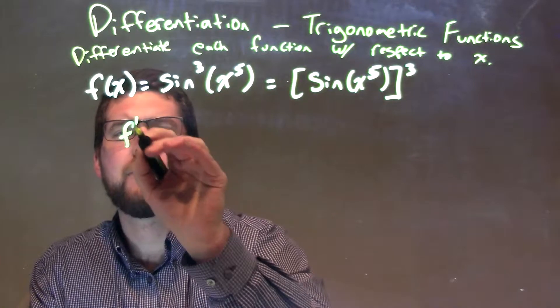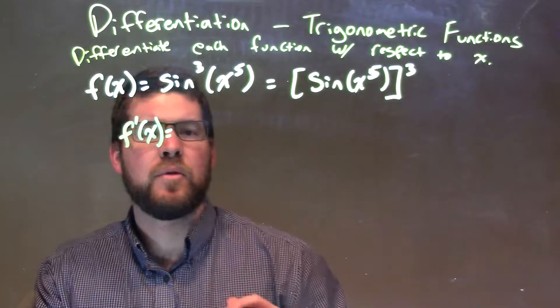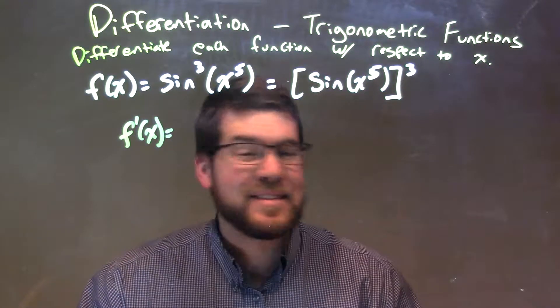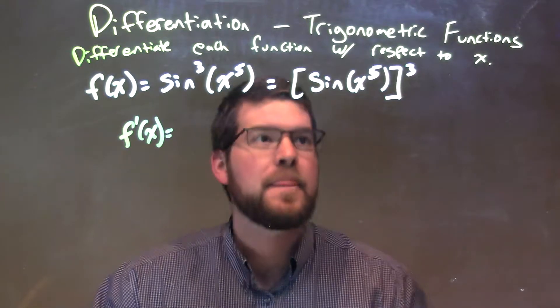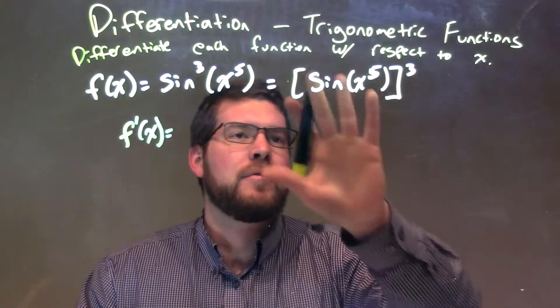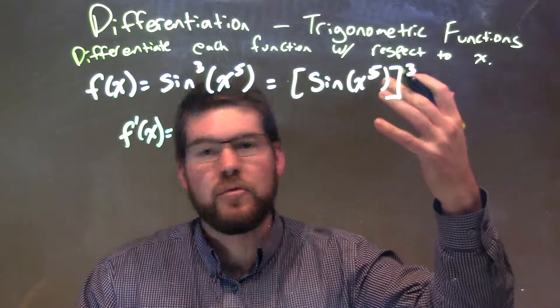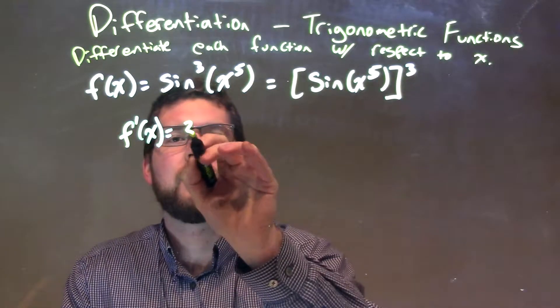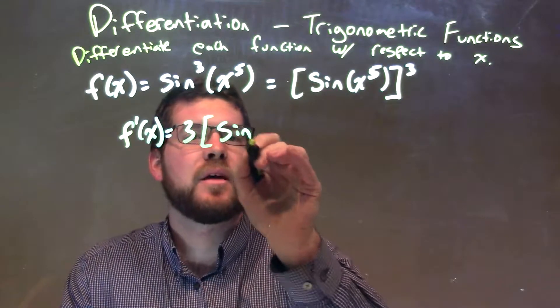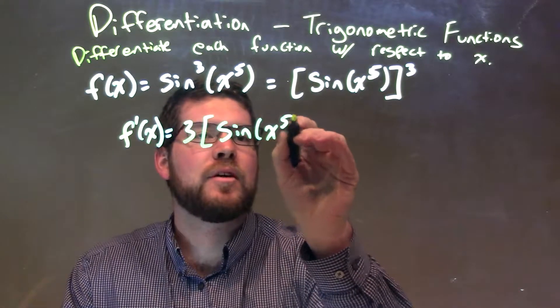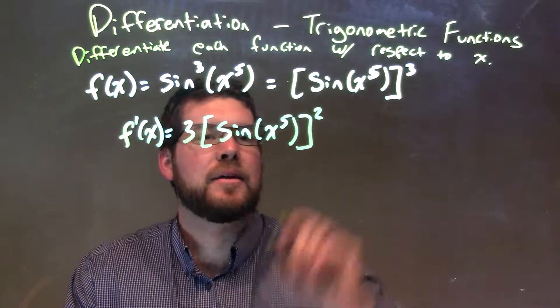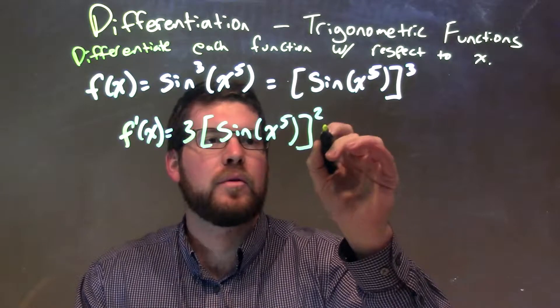So f prime of x here, taking the derivative, we're going to apply the chain rule twice. The chain rule: keep the inside the same, take the derivative from the outside. Power rule comes out with three of, keep the inside the same, sine of x to the fifth to the second power, using power rule there.